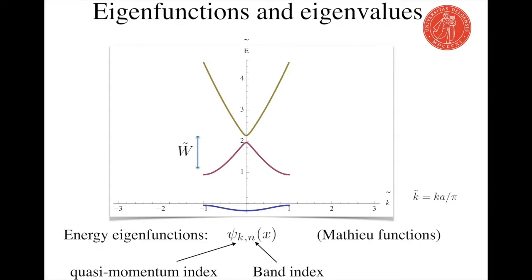For each of the Mathieu functions, there is also an associated energy eigenvalue, which can be read off the diagram shown here for the three lowest energy bands. W is the bandwidth.